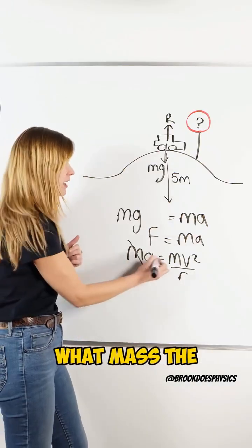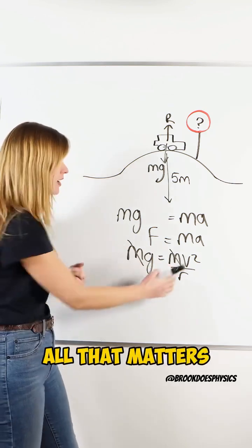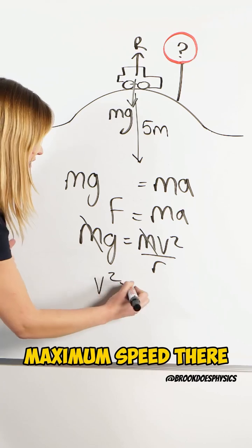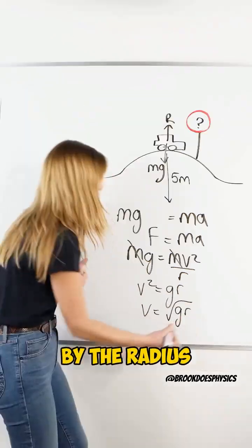Now you can see it doesn't matter what mass the car goes over the hill or if it's a truck or it's a lorry because the mass doesn't matter, all that matters to calculate our maximum speed is that we do the square root of gravity times by the radius of the hill.